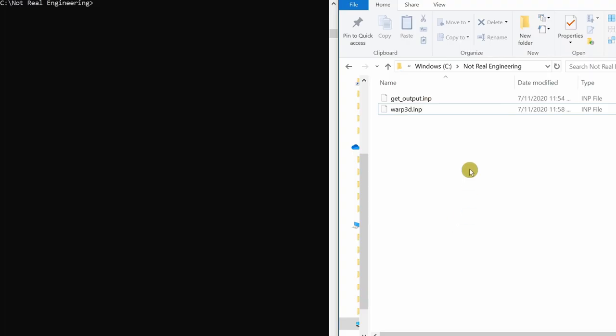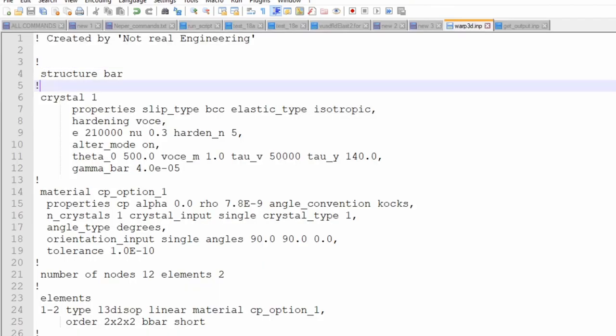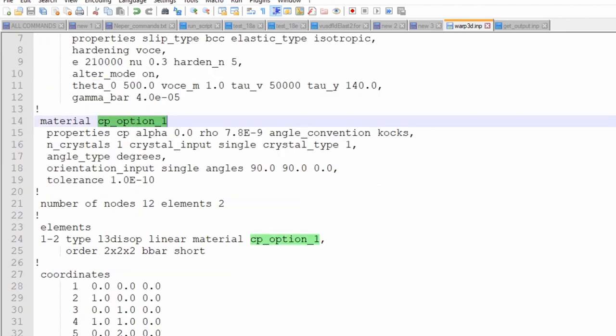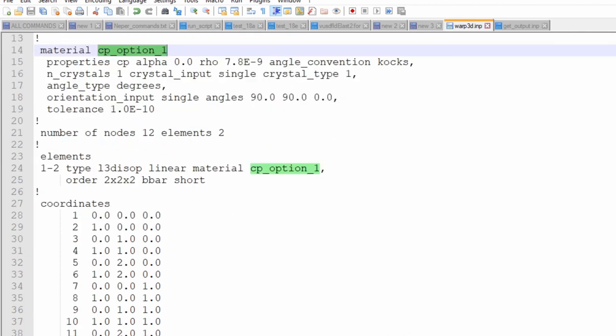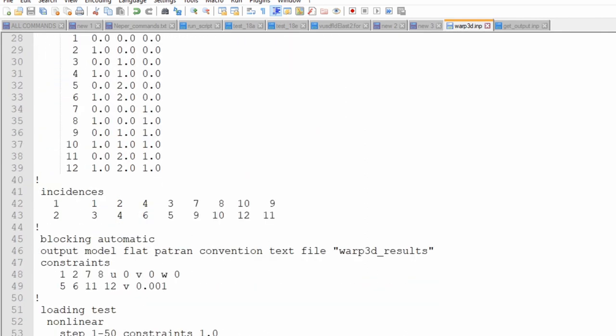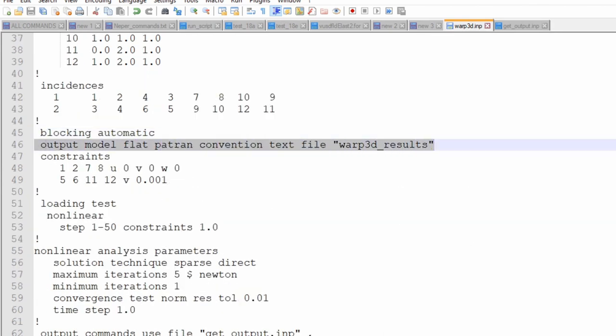Now let's go to the example. I have saved these two files in one directory. And I am accessing that directory through terminal over here. This warp3d-inp is input file. Let me quickly show you what is inside WARP3D input file. First, we are defining crystal. Then we are defining this material. Then our model consists of 12 nodes and two elements, which is a very simple model. Here we are defining element type and we are assigning material to those elements. These are the node coordinates. These are element connectivity. This is where we define the nodes in each element.